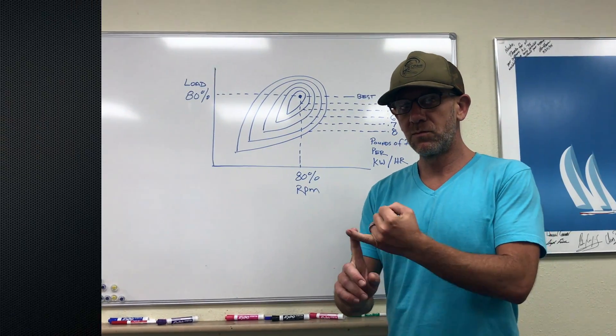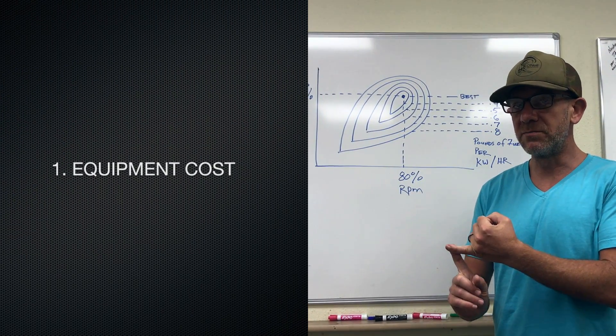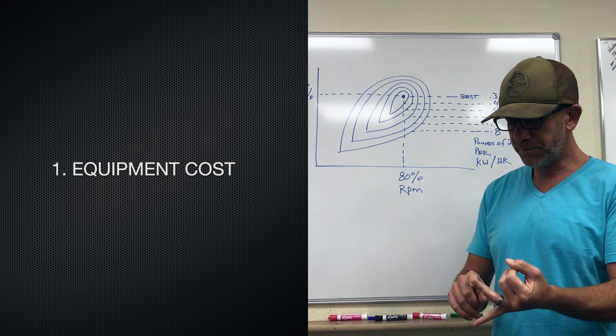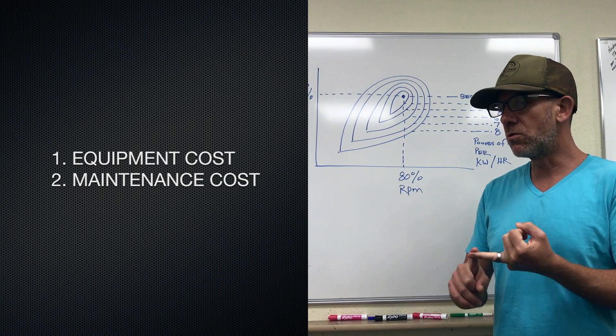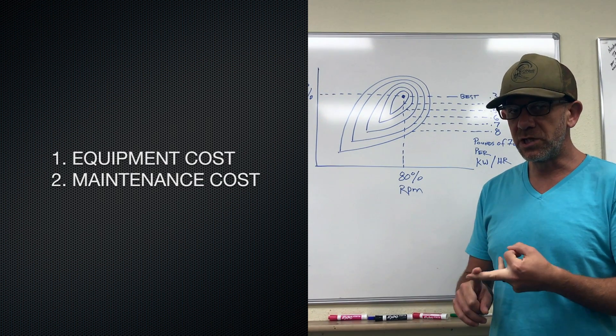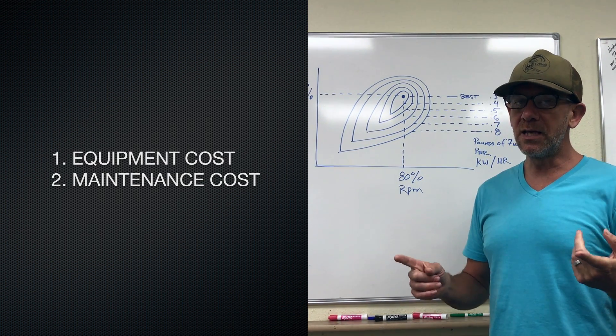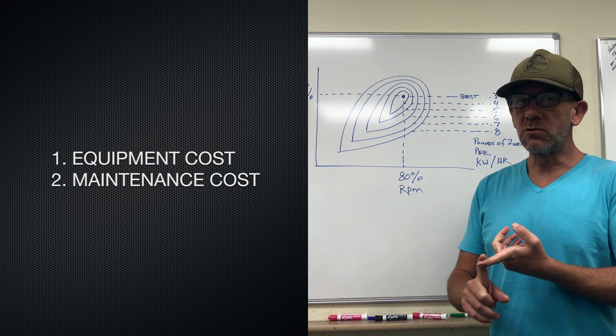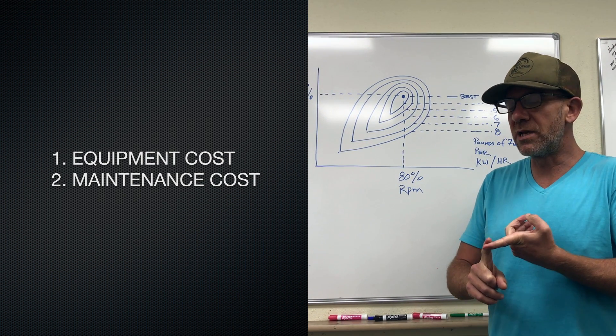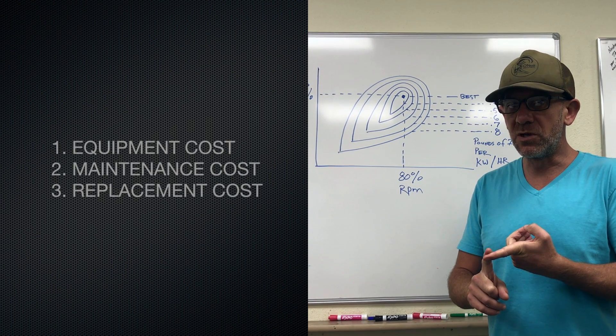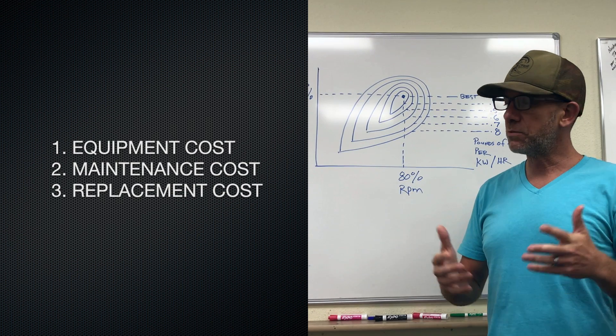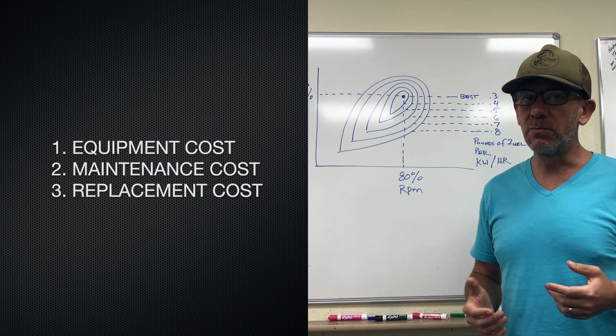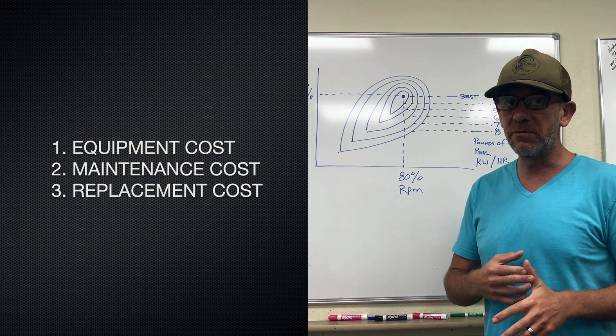First, you've got to buy the generator, so you've got equipment cost. You've got your maintenance cost to keep the generator running - oil changes, filter changes, things like that. And then most diesel engines only have about 2,000 hours worth of life in them. So knowing there's a little over 8,000 hours in a year, you can do the math on how much time you plan on running that diesel generator.